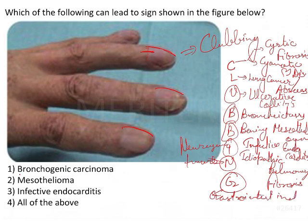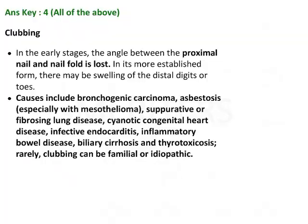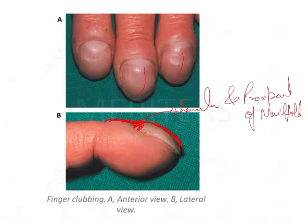If you remember this particular mnemonic, you will be able to solve 90 percent of the questions. Looking at the options: bronchogenic carcinoma is not directly in our mnemonic, but mesothelioma — yes, benign mesothelioma is there — and infective endocarditis is also there. So basically two of the options are from the mnemonic, meaning all of the above is the answer. You can make smart guesses by remembering this mnemonic for solving questions on the causes of clubbing.